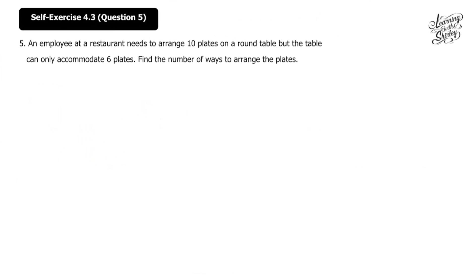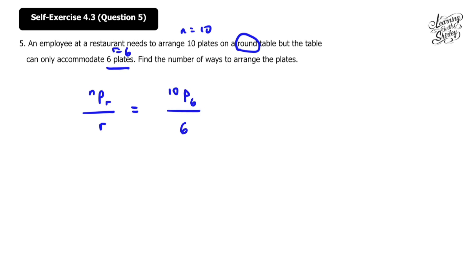Let's look at self-exercise 4.3, question 5. An employee at a restaurant needs to arrange 10 plates on a round table, but the table can only accommodate 6 plates. Find the number of ways to arrange the plates. The keyword is round, so we use the formula nPr over r. With n equals 10 and r equals 6, this is 10P6 over 6. 10P6 equals 151,200, and dividing by 6 gives 25,200 ways.